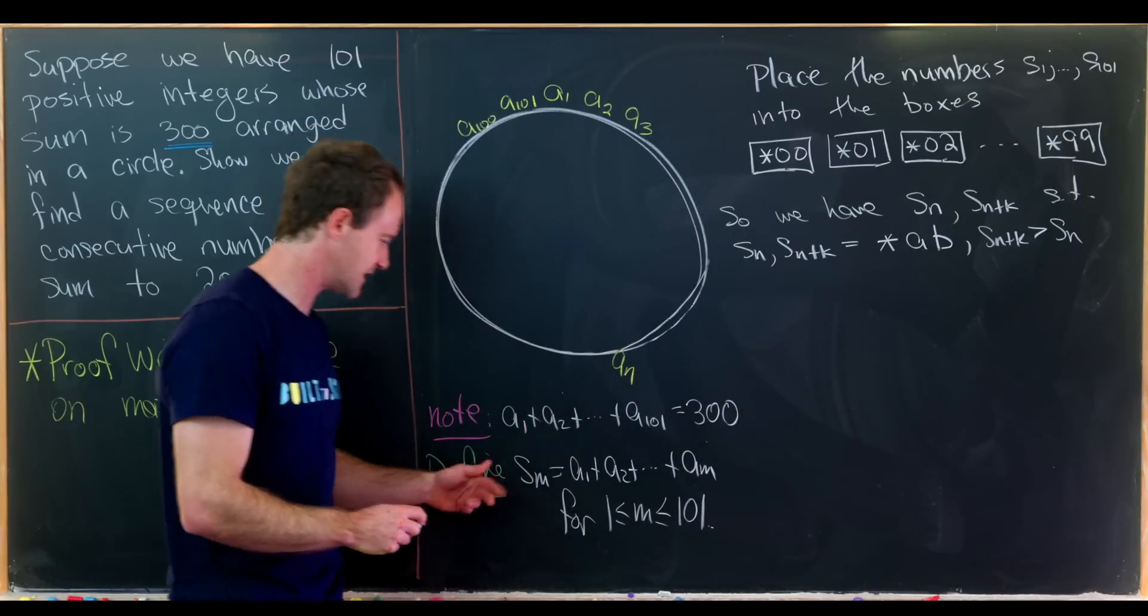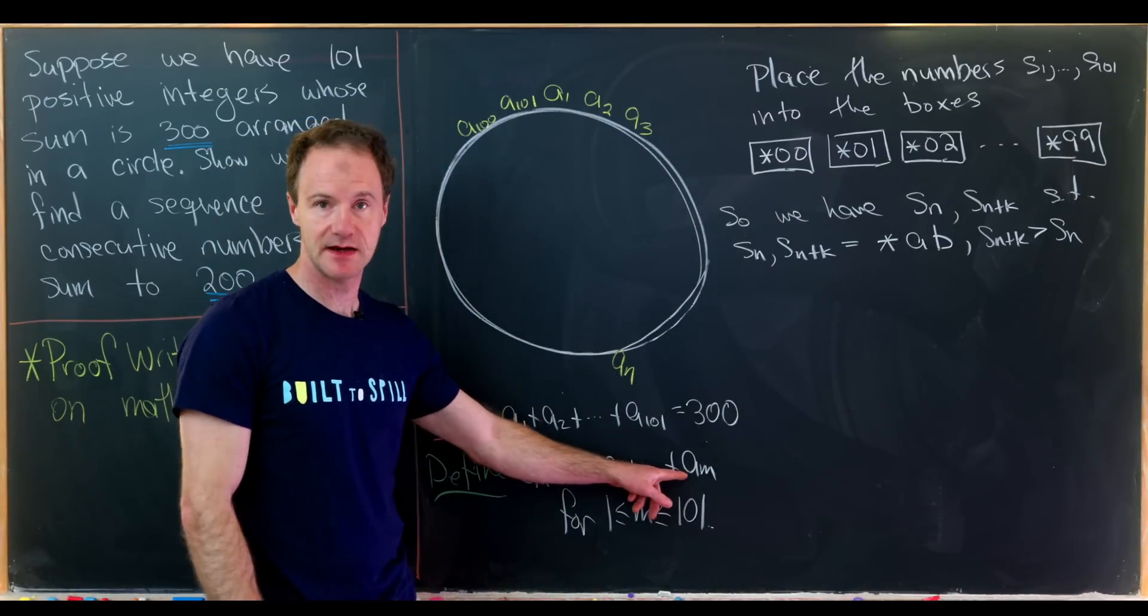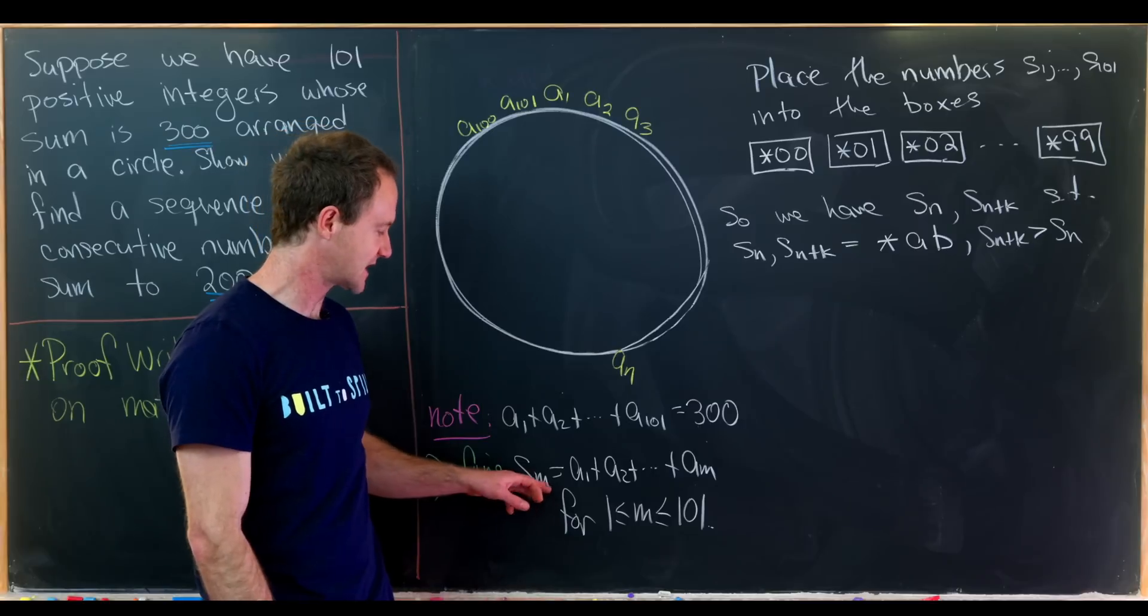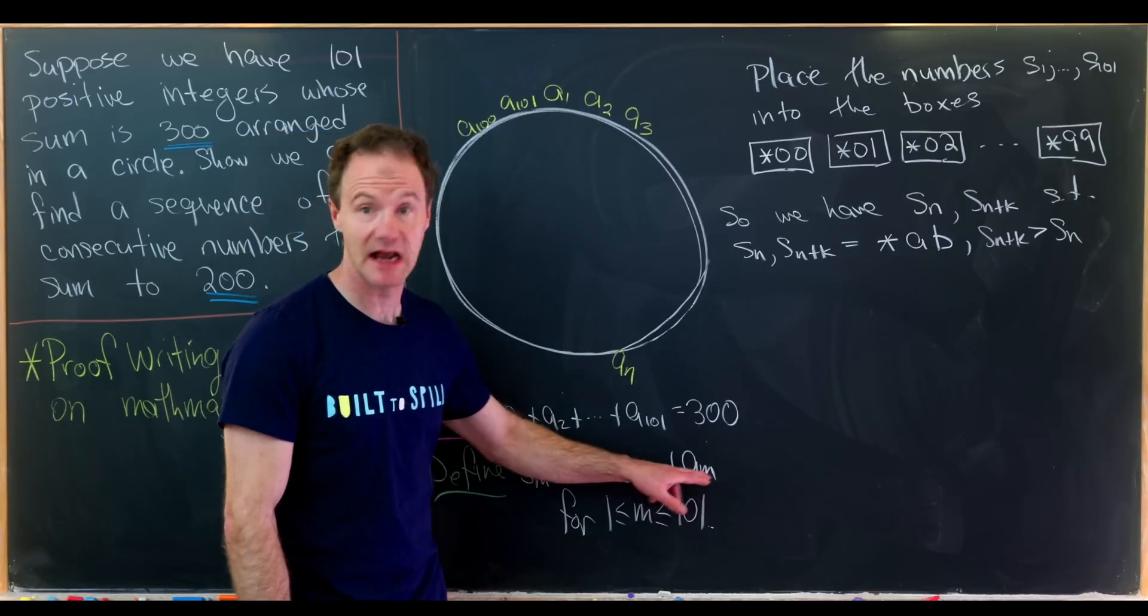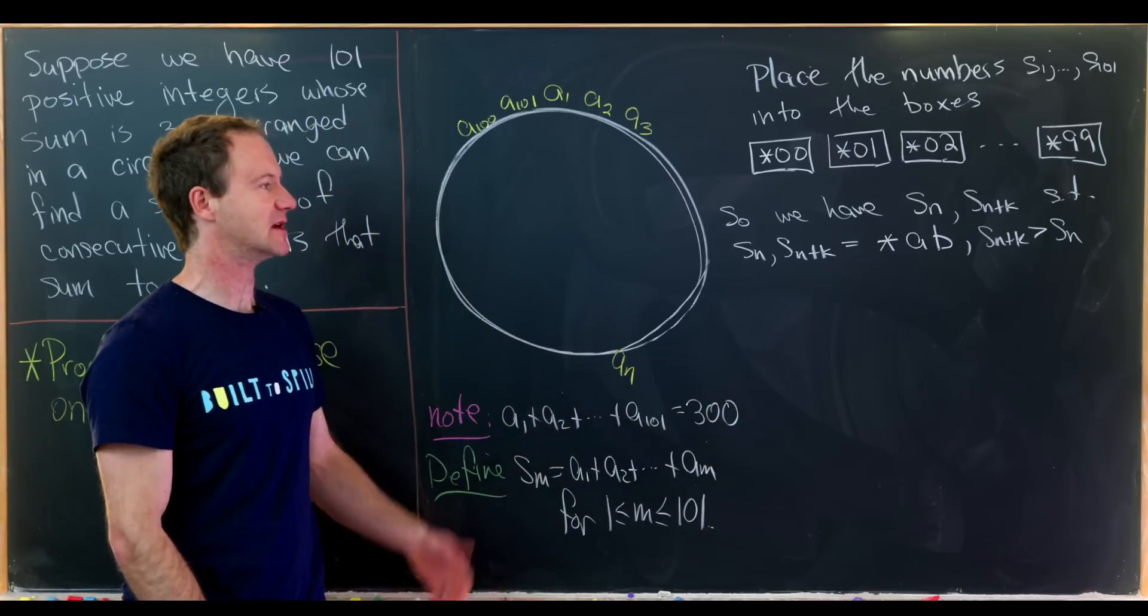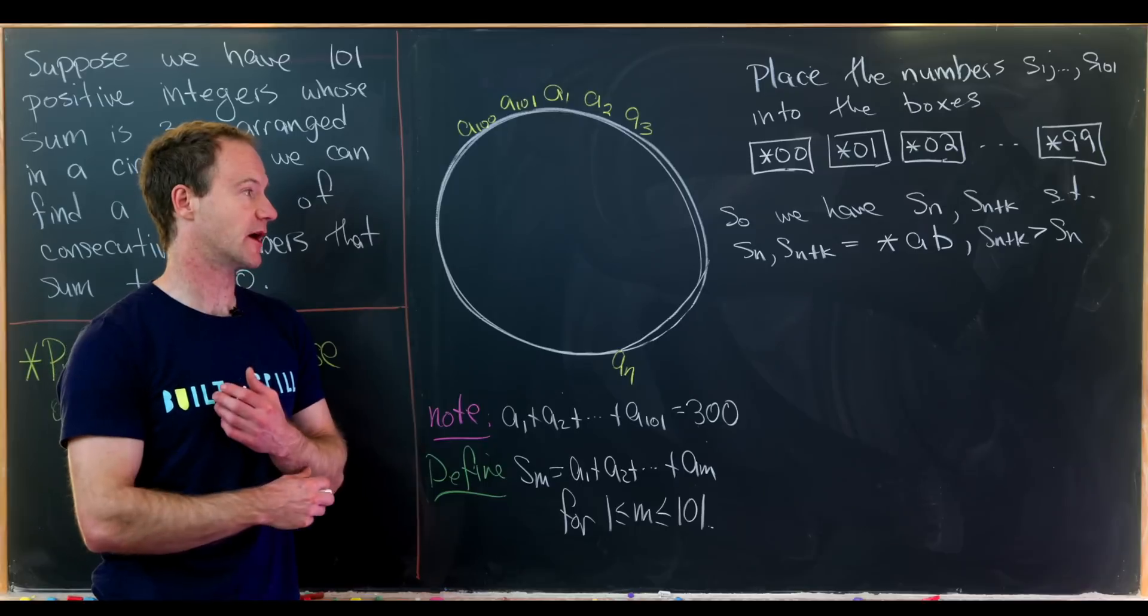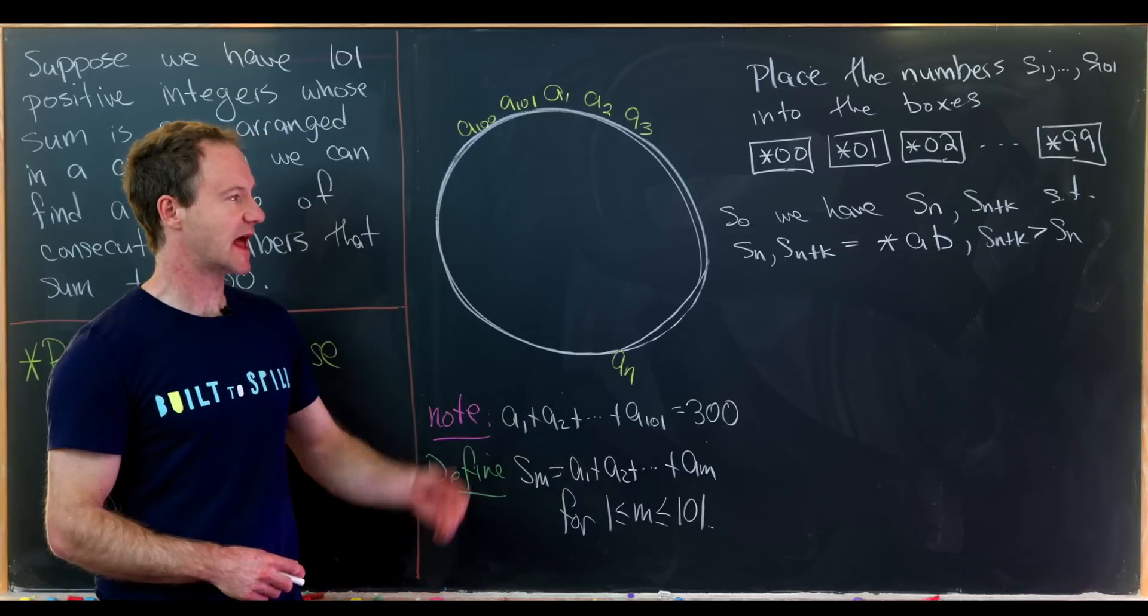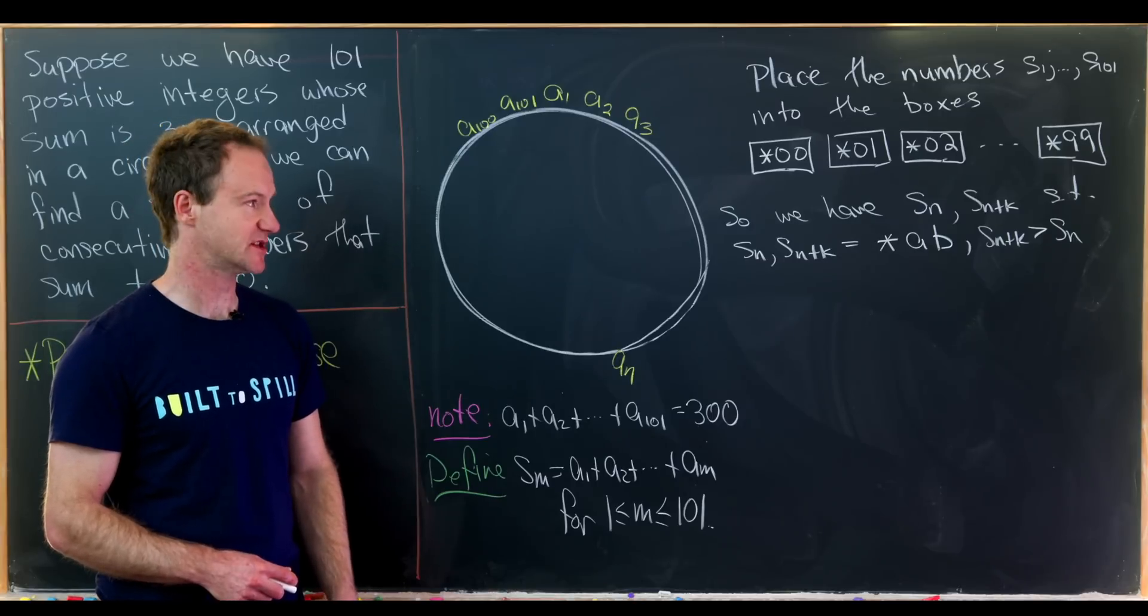Recall that s sub n is going to be the sum of a1 up to an, and then s sub n plus k will be a1 up to an and then further. So you're adding more natural numbers on there. But now if sn and sn plus k end in the same two digits,